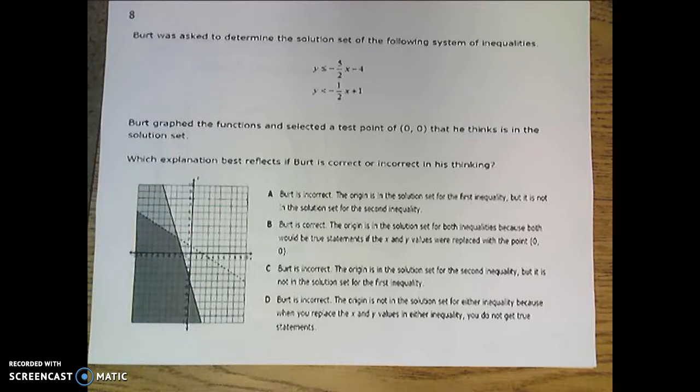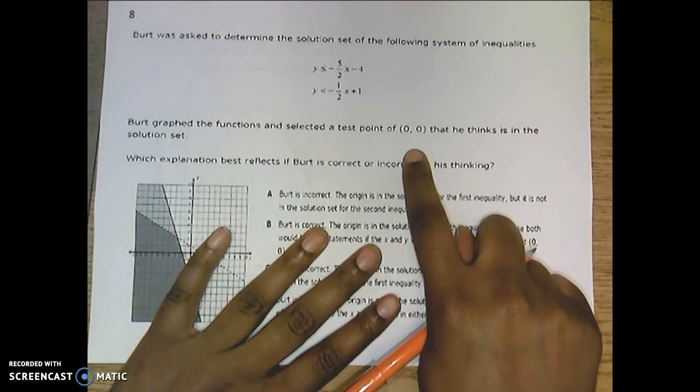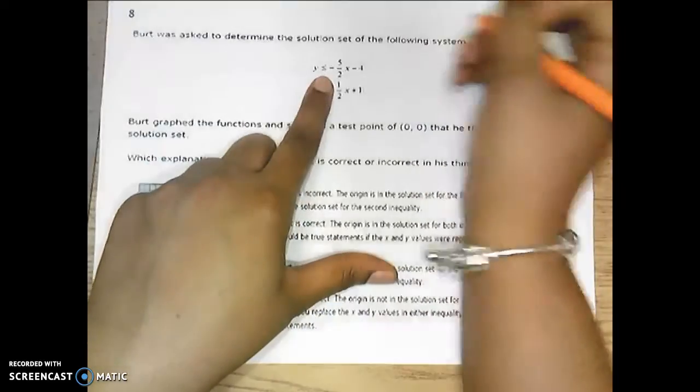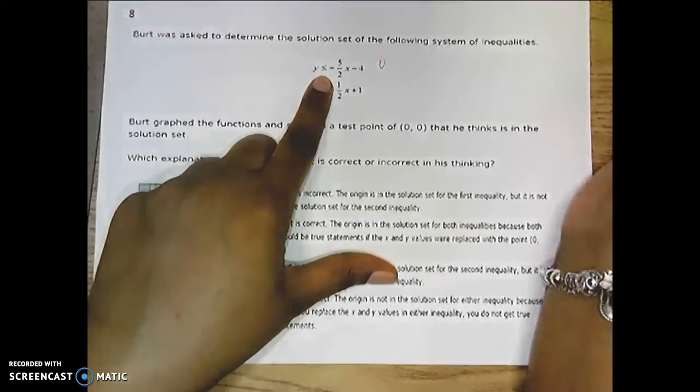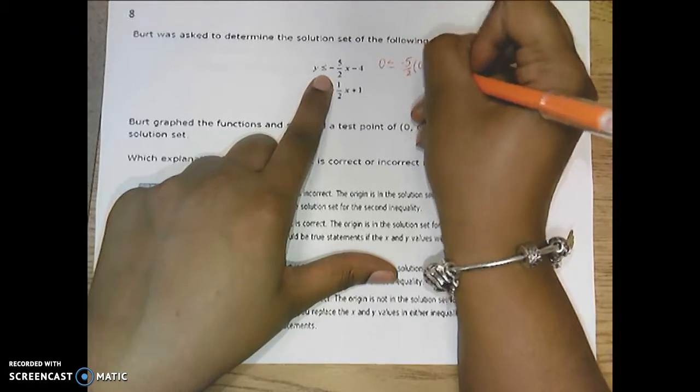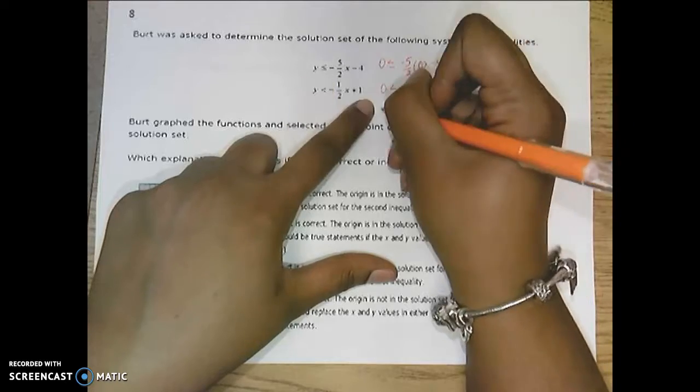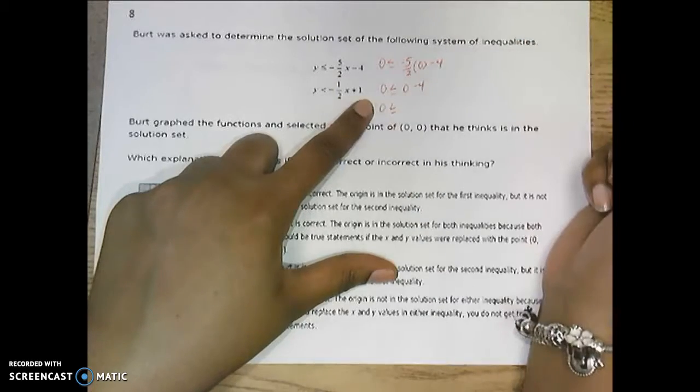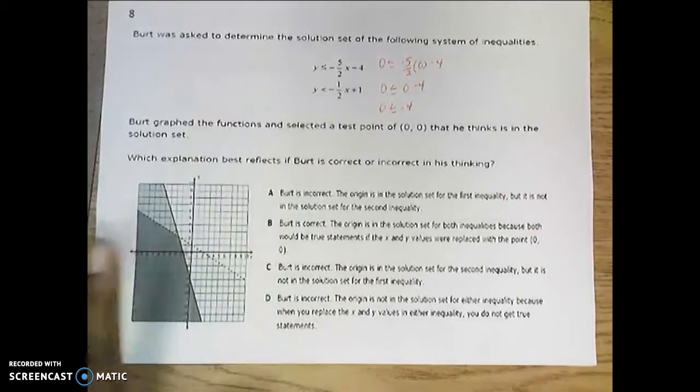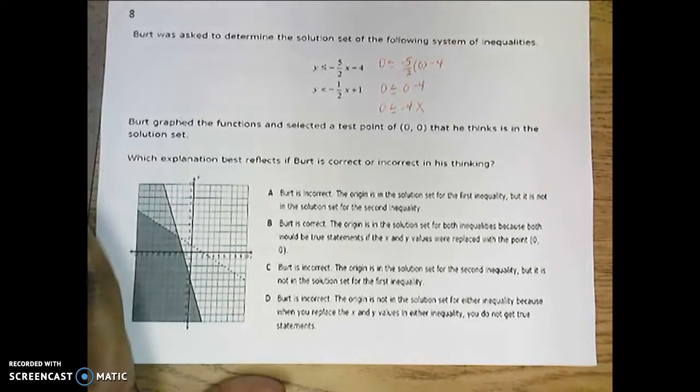Number 8 gave a lot of information. So if you want to pause the video and read it, you can. But in short, what it's saying is that he wanted to test the origin 0, 0 to see if it will be a solution to the set. If I plug in a 0 here on the first equation, 0 is less than or equal to a negative 5 halves times 0 minus 4. This is the same thing as 0 is less than or equal to 0 minus 4. So your question to yourself should be, is 0 less than or equal to a negative 4? Negative 4 is further to the left. Negative 5 doesn't work there.